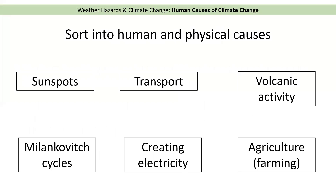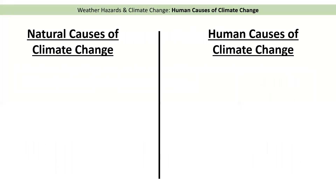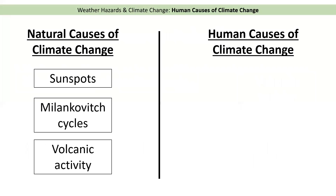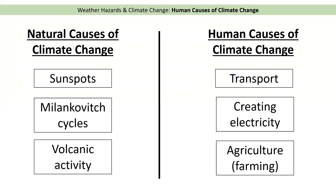You should have previously watched the natural or physical causes of climate change video. Please pause the video now and try to sort these causes into human and physical causes of climate change. The natural causes are things that have changed the climate in the past but are not caused by humans: sunspots, volcanic activity, and the Milankovitch cycles — which are how the earth rotates or moves around the Sun. The human causes of climate change are transport (planes, cars, lorries), creating electricity by burning fossil fuels, and farming or agriculture — because of cows burping out methane.